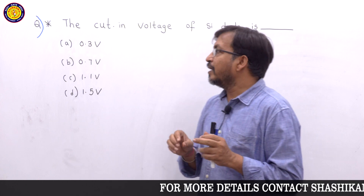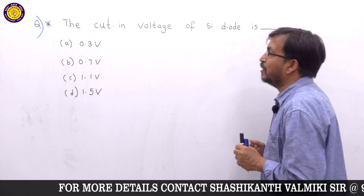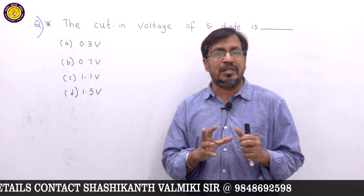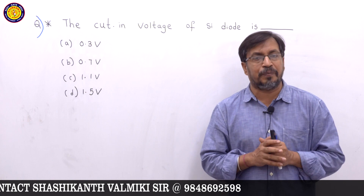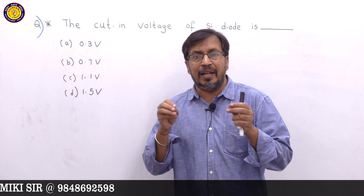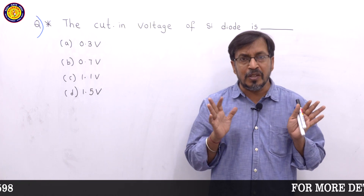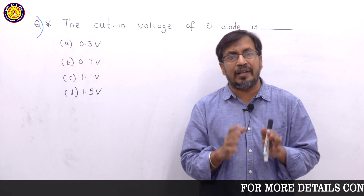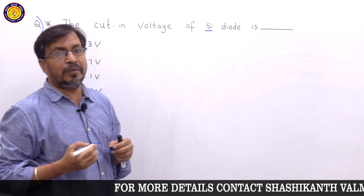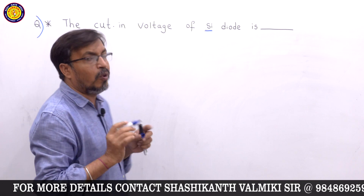Students, this question is easy to figure out. We need to compare the cutting voltage of a germanium diode versus the cutting voltage of a silicon diode. If you look at the two values, 90% of this cutting voltage topic comes down to these two numbers. The answer is 0.7 volts.